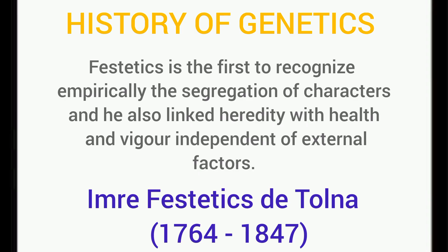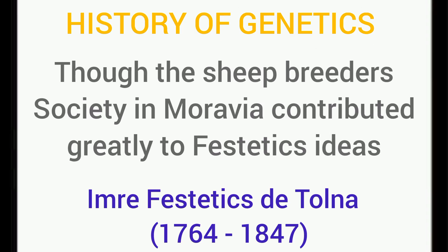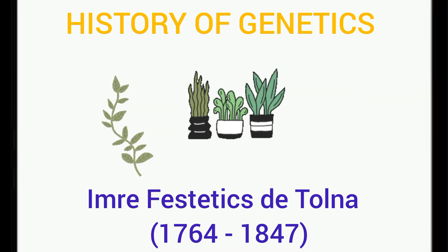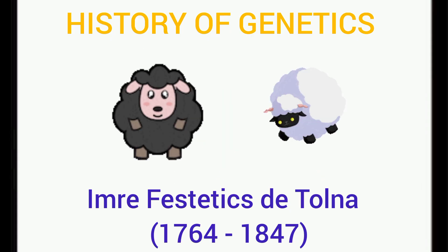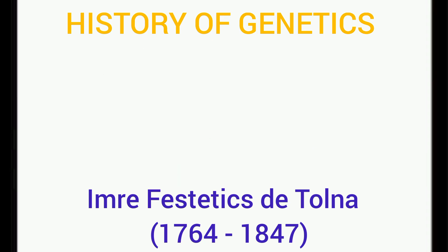The segregation of characters that we later came to know through Mendel's work was already laid as a foundation through Festetics' work. His ideas were those of Imre Festetics Dotona — a French name. To understand what Festetics did, think about traits that can be manipulated through inbreeding. For example, if you take a black sheep and breed it with a white sheep and want a mixed character, you can separate the progenies with that mixed character and breed them amongst themselves to continue producing what you want. From Festetics' ideas, farmers started breeding and getting exactly what they wanted from their animals.